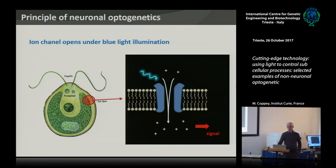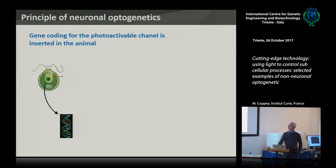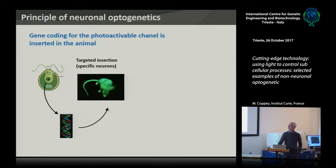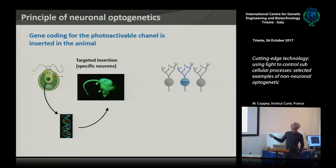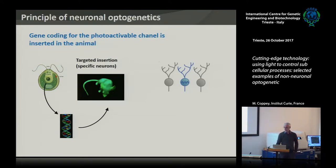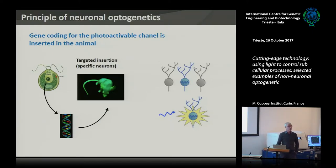The idea of optogenetics for neurobiology was to take the gene encoding these light-gated receptors — called channelrhodopsin — and insert them in specific neurons using promoters specific for given neurons, such that only the subset of neurons controlling a given behavior will be activated when you shine light. So it's a bit like electrodes, but you use light to activate neurons.